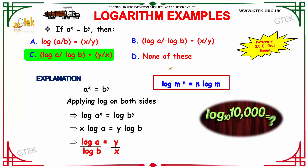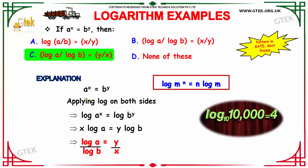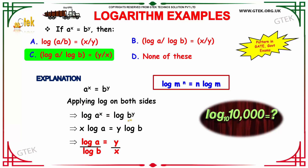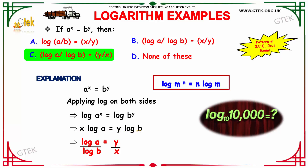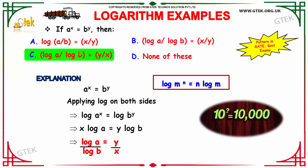Using the property that log m to the power n equals n log m, we apply log to both sides of the equation a to the power x equals b to the power y. This gives x log a equals y log b. Bringing log terms to the left-hand side and variables to the right-hand side, log a by log b equals y by x, which is option C.